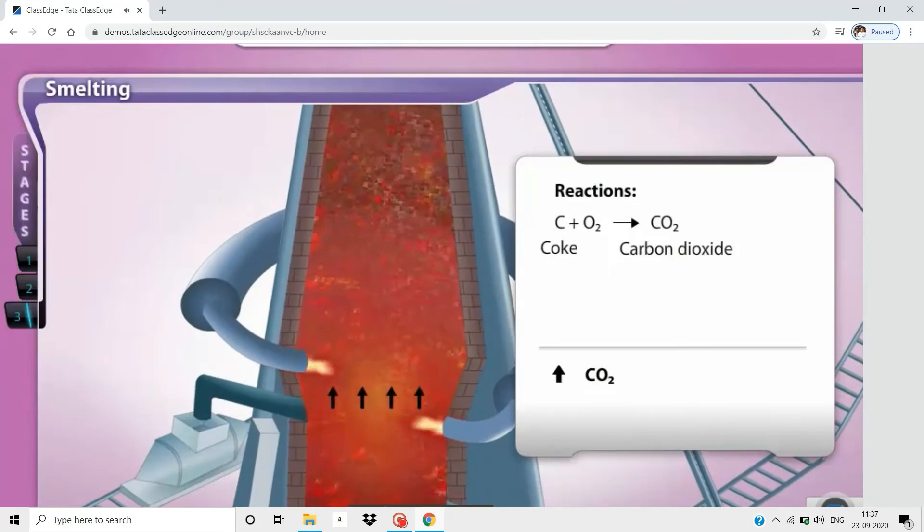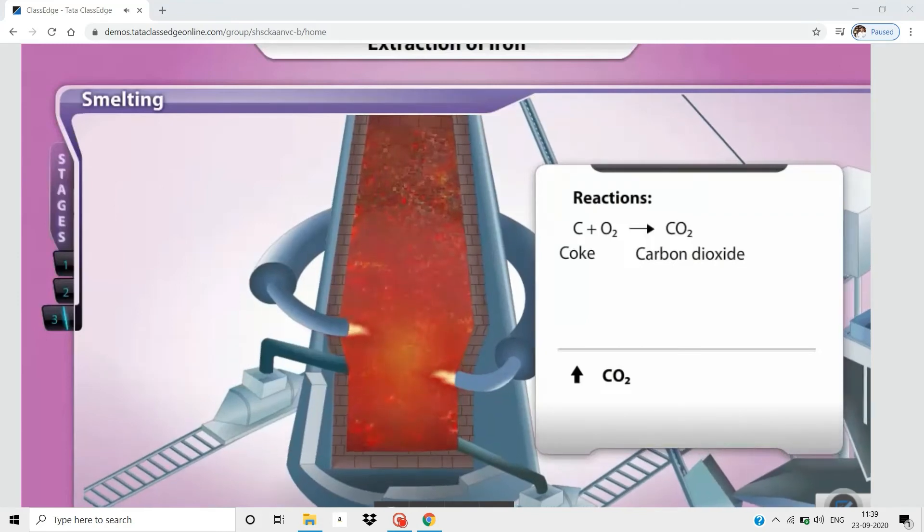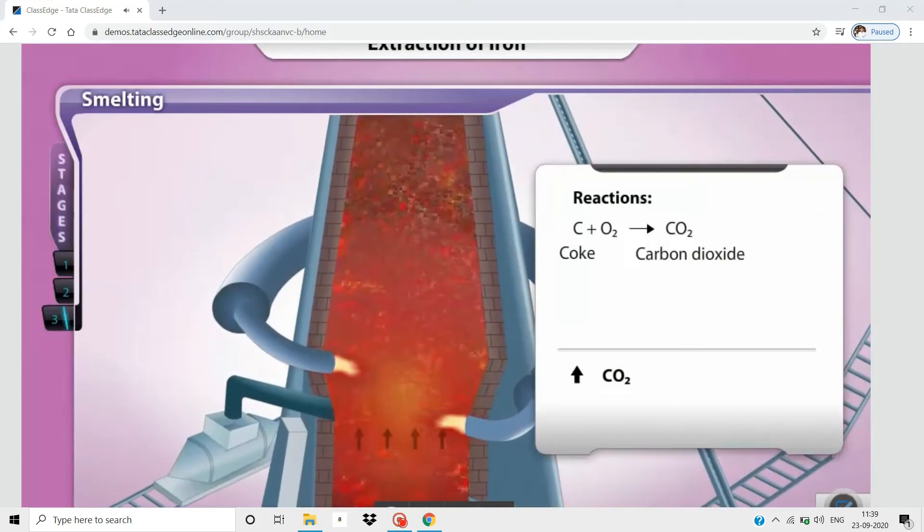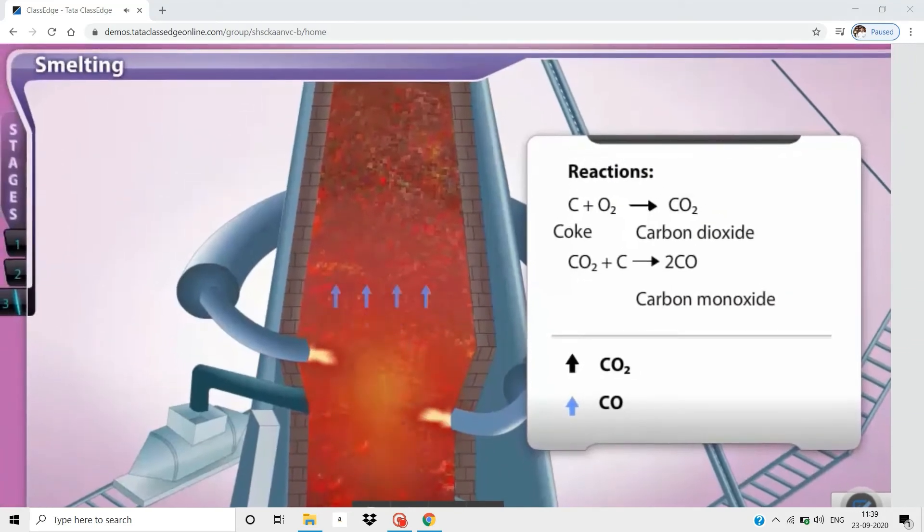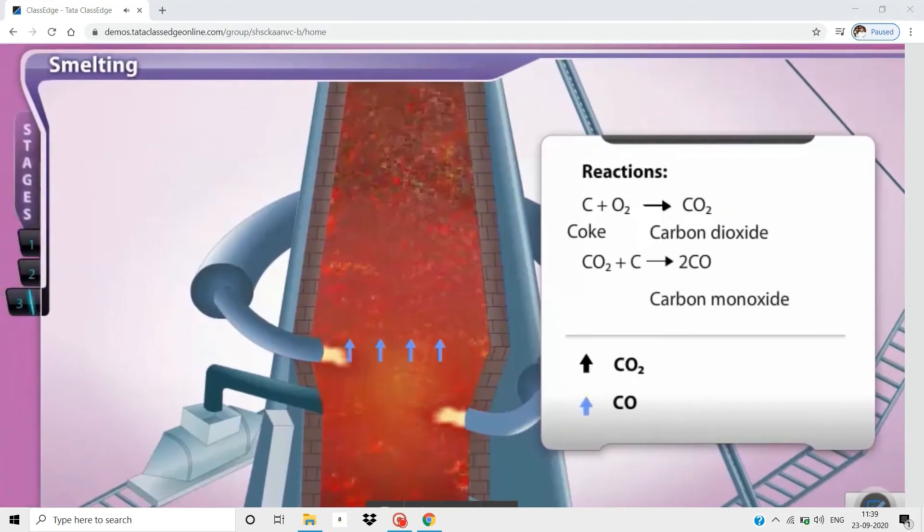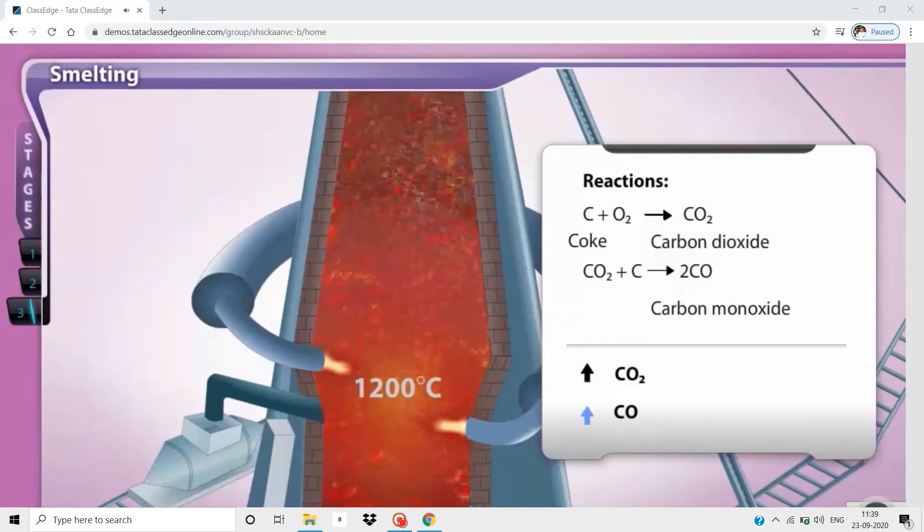The carbon dioxide formed moves up the furnace and reacts with more coke, thus getting reduced to carbon monoxide. This being an endothermic reaction, reduces the temperature to 1200 degrees Celsius.